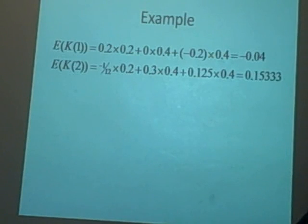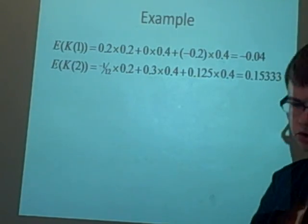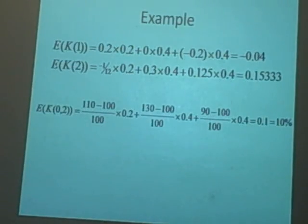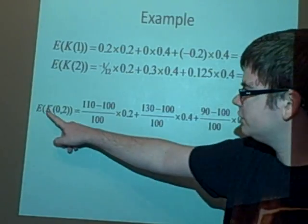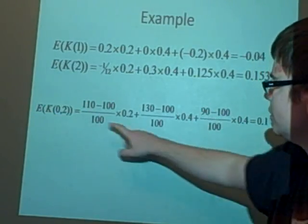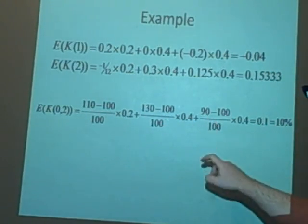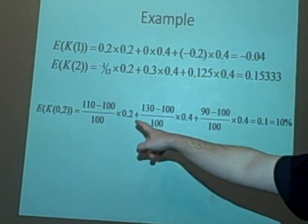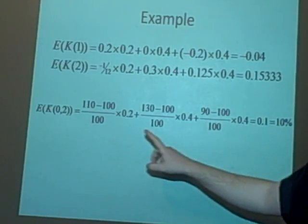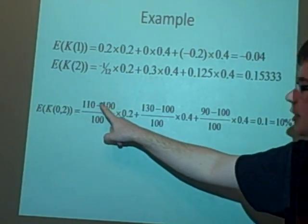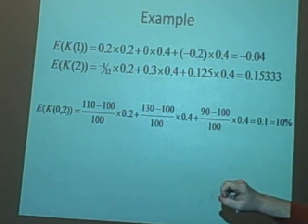Now we want to work out the expectation of K(0,2). First we find K(0,2), which I've done all in the same thing. So 110 minus 100 over 100, 130 minus 100 over 100, 90 minus 100 over 100, which gives us the negative here, times all the probabilities. Remember we've got this 0 and 2, so this is S(0), this is S(2), S(0), S(2), and so on, which gives us 0.1 or 10%.